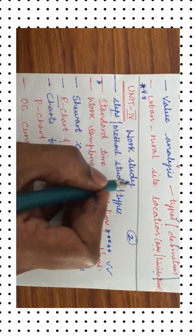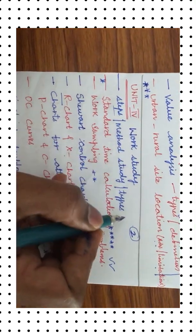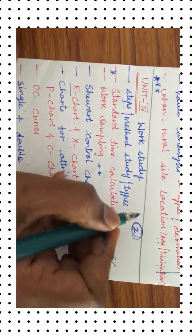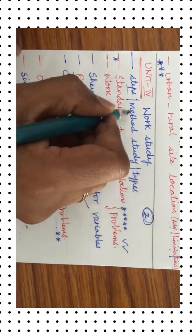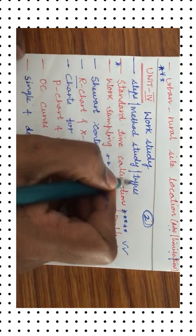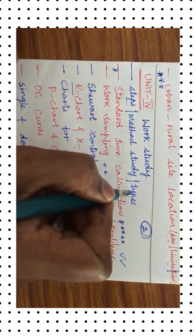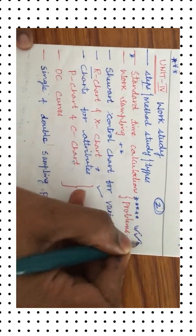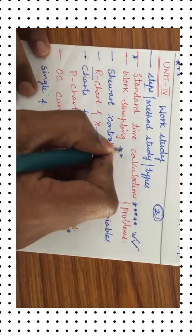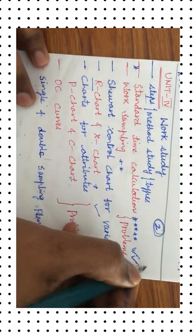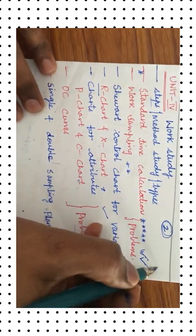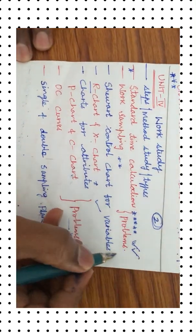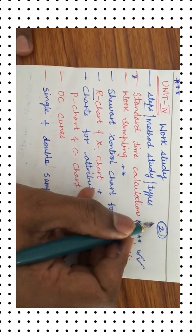Unit 4 is all about work study, and I am expecting 2 questions from this unit. It covers work study steps, method study and its types, key ratings, allowances, and standard time calculation — a very important topic. Work sampling problems may form one of the questions from Unit 4.